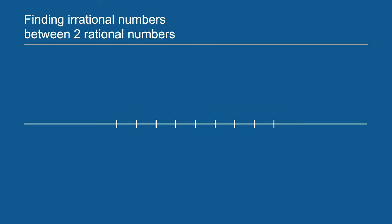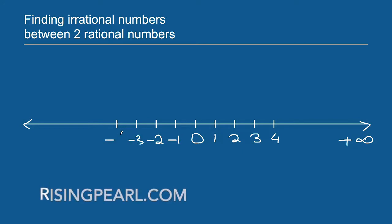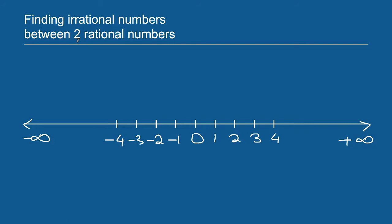Let's quickly review what is an irrational number. We have a number line that extends infinitely in both directions. On the right side of 0 we have positive numbers extending all the way to plus infinity, and on the left side we have all the negative numbers going to minus infinity. A rational number is written in the form P by Q, where both P and Q are integers and Q cannot equal 0, because if the denominator is 0 the expression is undefined.